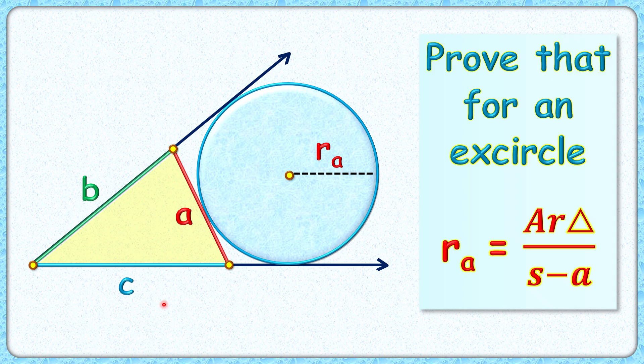Welcome everyone. Given to us is a triangle with side lengths a, b, and c. This video will prove that the radius of the excircle touching the side length a is given by the area of this yellow triangle divided by s minus a, where s is the semi-perimeter.